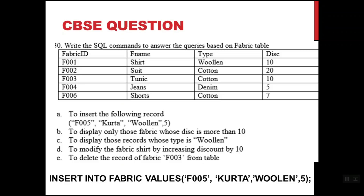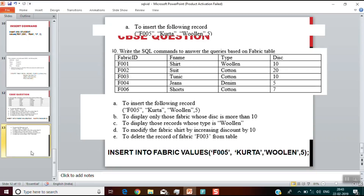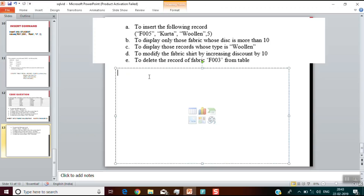Now when we talk about questions B, C, D, E, these are the queries we need to write. For writing queries we need to understand that we divide our answer into three parts: the first part is SELECT, then FROM, and then WHERE. The second query is we need to display those fabrics whose discount is more than 10.